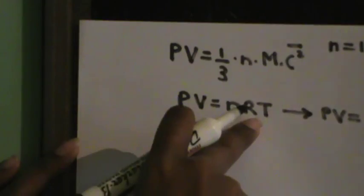I'll substitute pV = RT into the KTG equation. So RT equals one-third times n times M times c-squared-bar. Since n equals 1, this becomes RT equals one-third times M times c-squared-bar. Therefore, c-squared-bar equals 3RT divided by M.